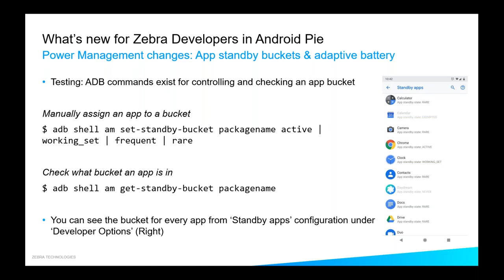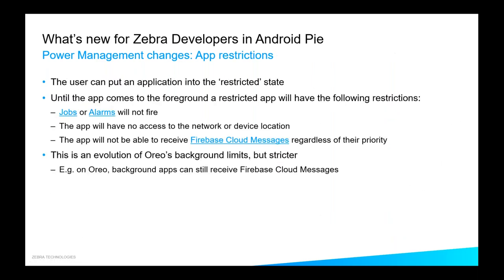There are some ADB commands for testing — a command to put your application in a particular bucket or retrieve what bucket your application is in — or through the developer options. If you go to Standby Apps under developer options, it will tell you which bucket each application is in. Notice how the calendar here is exempted. If you had whitelisted your application against Doze mode, it would be exempted just like the calendar app in this screenshot.